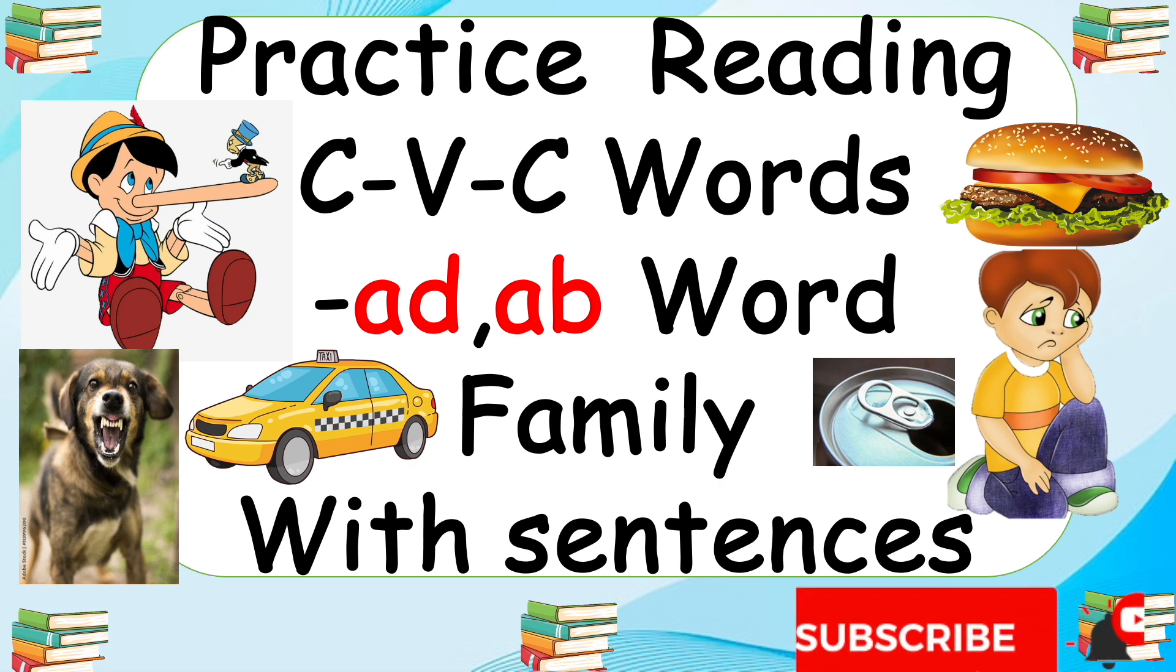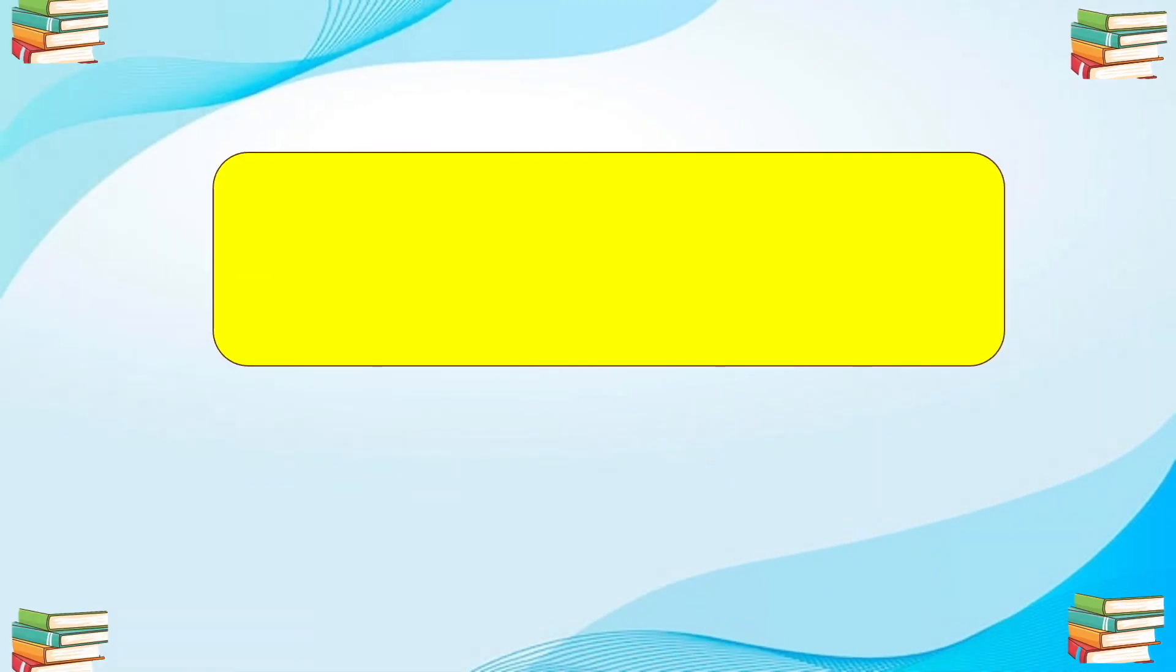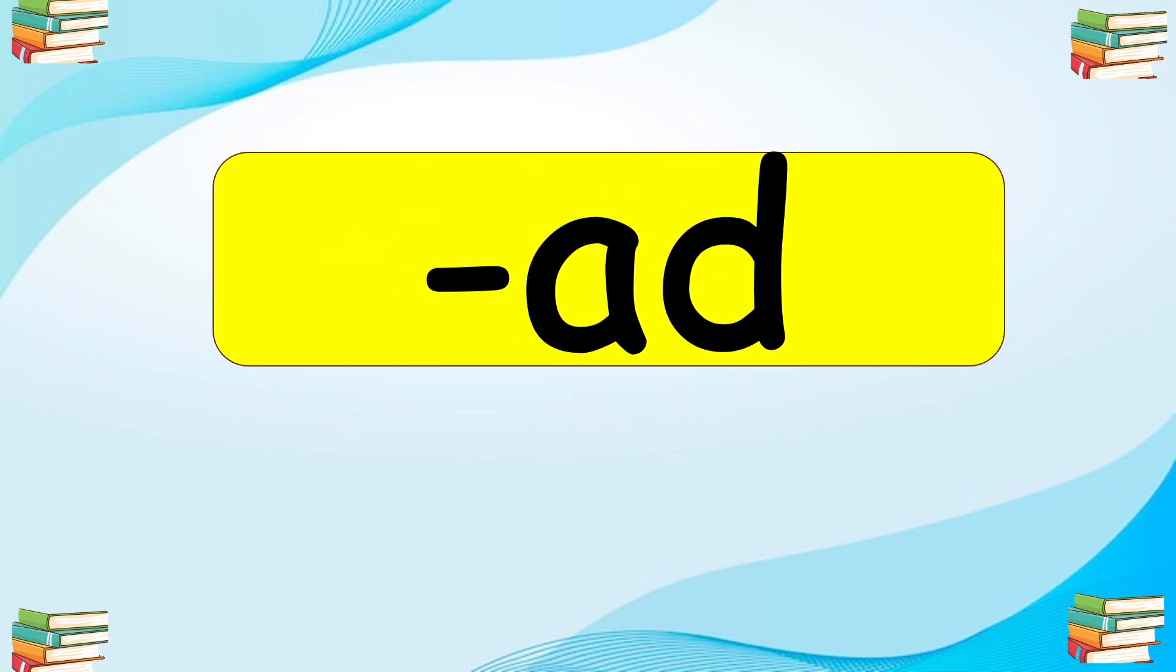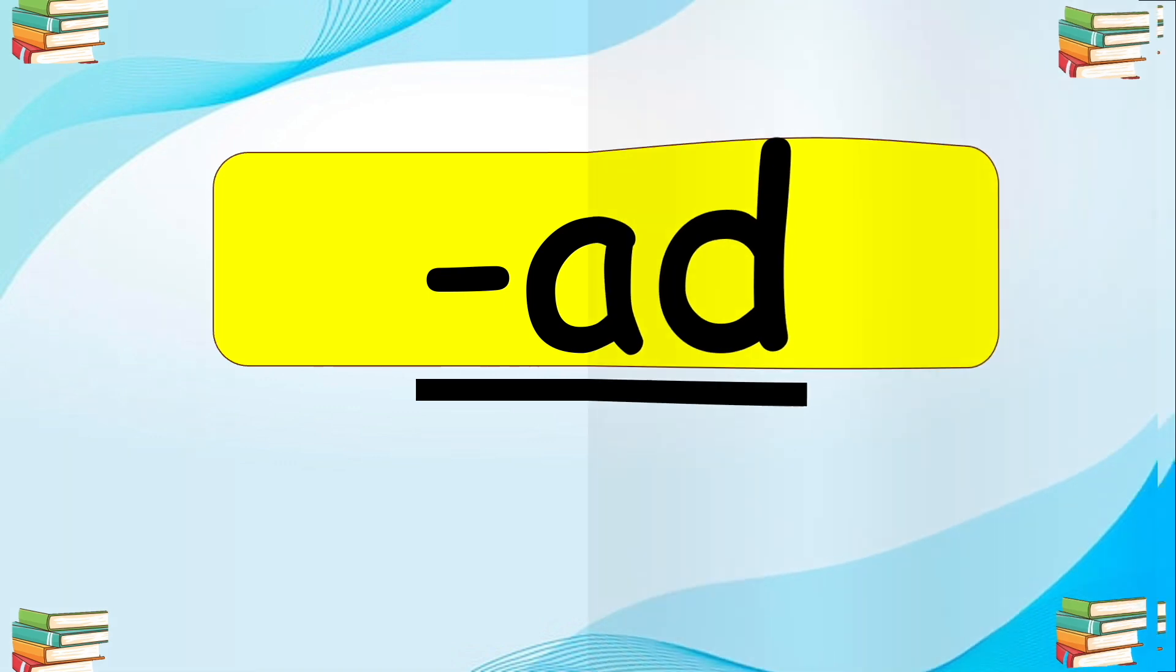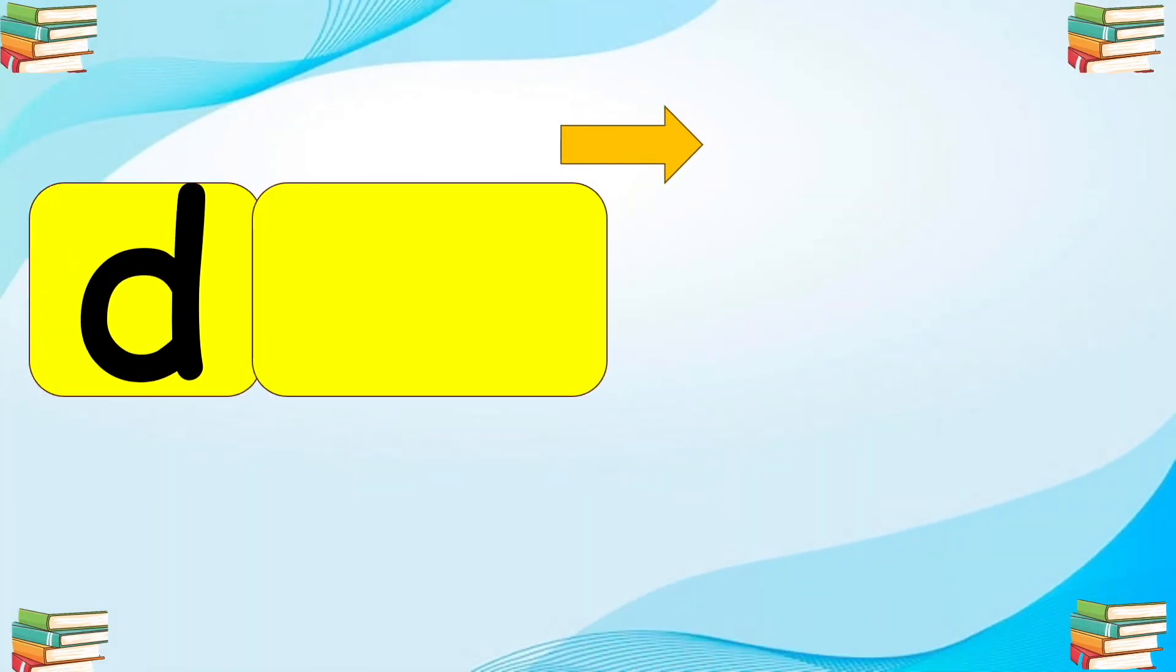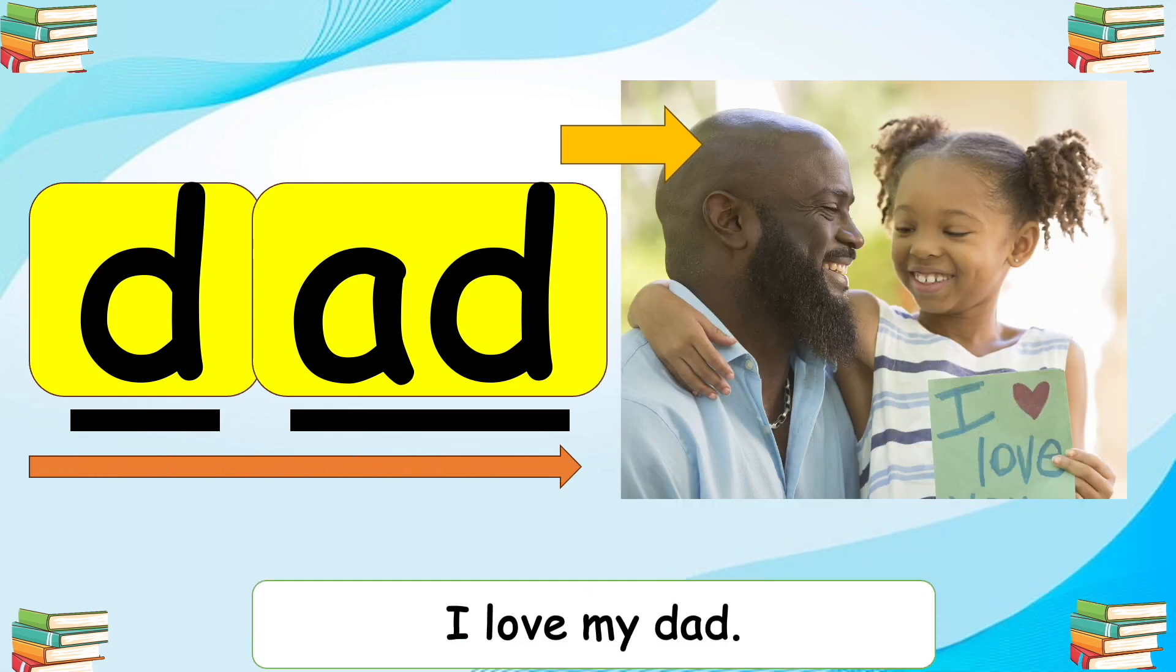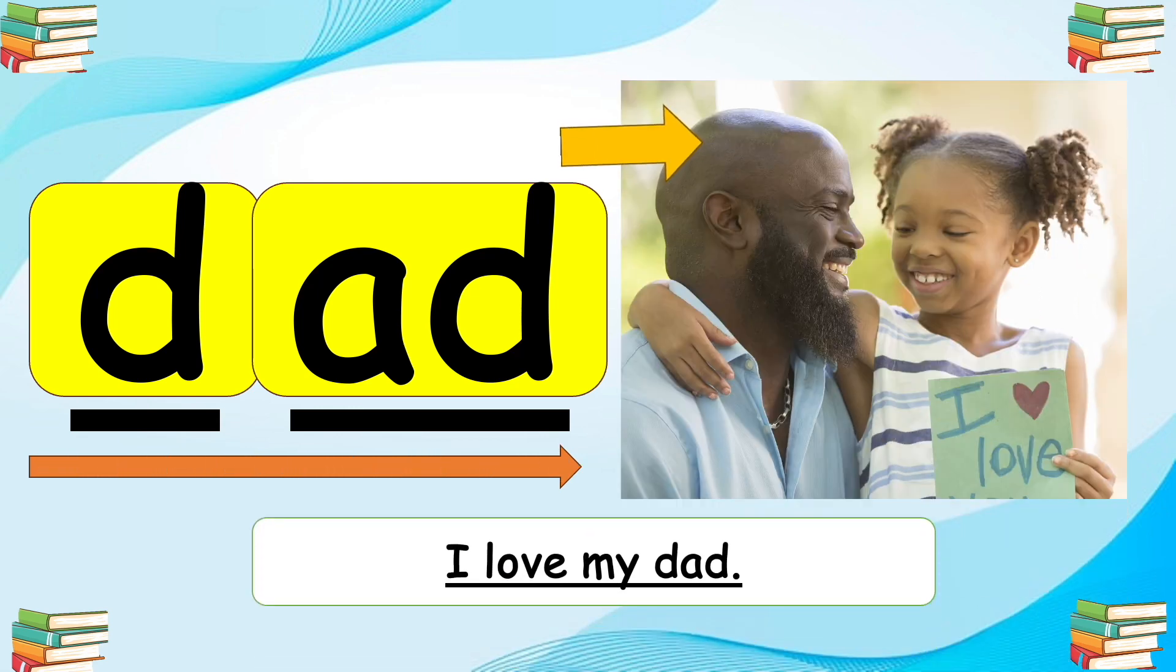Hi everyone, it's time to practice reading CVC words with the -ad and -ab word families. When we join the sounds of A and D, it makes 'ad'. Say after me: ad. Let's have word number one. Add, add, add, add, dad, dad. I love my dad. Your turn.